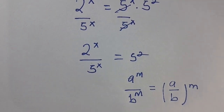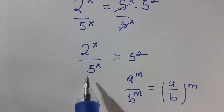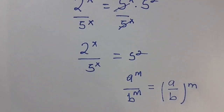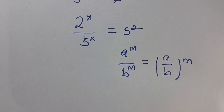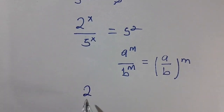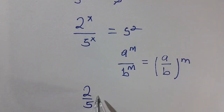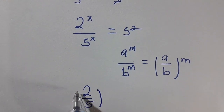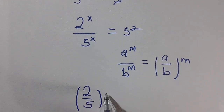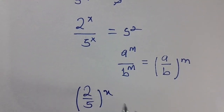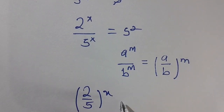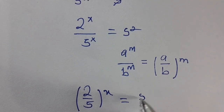So we can write the left-hand side as 2 divided by 5, all raised to the power x, equals 5 raised to the power 2.